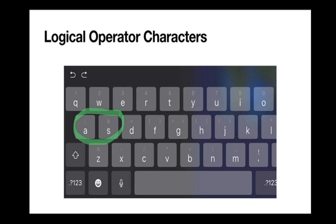One of the most difficult things about using these operators is finding them on the keyboard. On the iPad keyboard, the logical OR operator — the pipe — is over the A key. Tap on the A and drag down to get one pipe, and you need two of them for your OR operator. The ampersand is over the S key — tap on S and drag down. You need two of those for the AND operator as well.